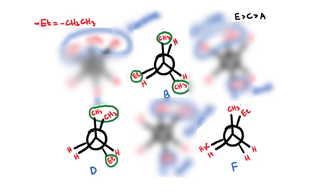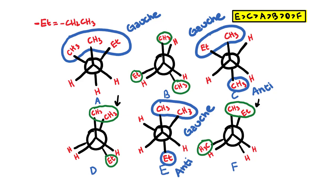Now let's look at structure F. We have a methyl right in front of an ethyl group, and we also have another methyl that is isolated behind a hydrogen. So when comparing structures D, B, and F, the best structure in terms of stability is going to be structure B because we don't have any of our bulky groups on top of each other. Now comparing D and F: structure D has a methyl in front of another methyl, while structure F has a methyl in front of an ethyl. Because an ethyl group is even bulkier than a methyl group, we would rather have two methyls overlapping than a methyl overlapping an ethyl. So D is more stable than F. The final stability ranking is E being the most stable and F being the least stable conformation for this molecule.